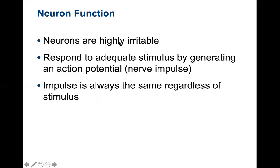We left off with neuron physiology. As I mentioned, neurons are highly irritable. They will respond to adequate stimulus by generating action potentials, which is a nerve impulse — the actual depolarization of the membrane, that's the traveling of the signal. When we talk about action potentials, the impulse is always the same regardless of the stimulus. There are no strong action potentials, there are no weak action potentials, they're just action potentials.